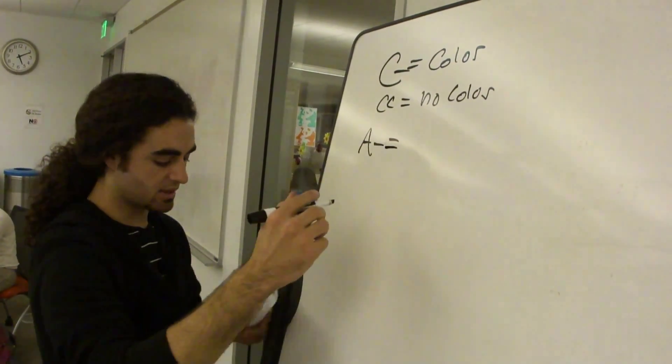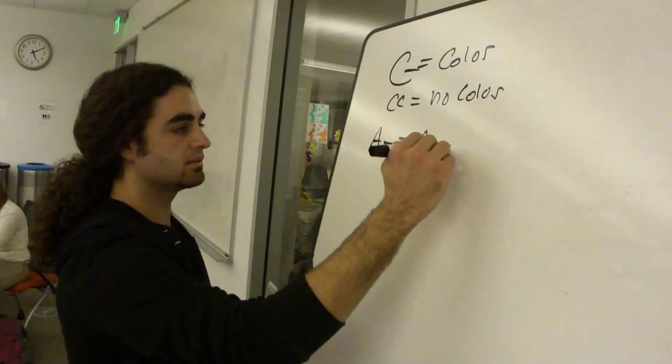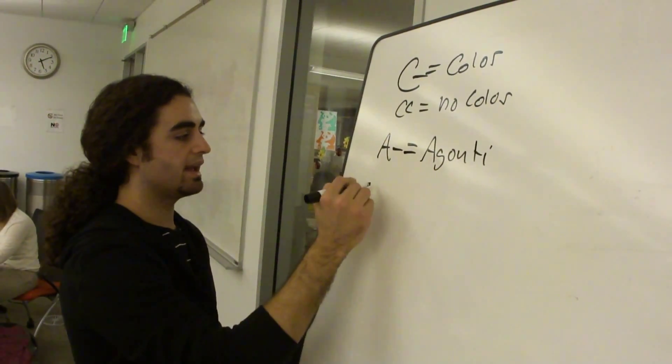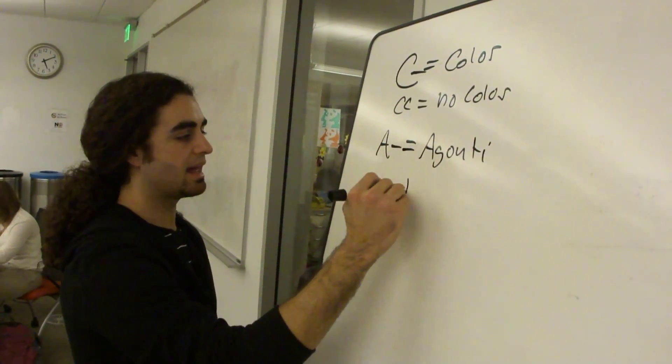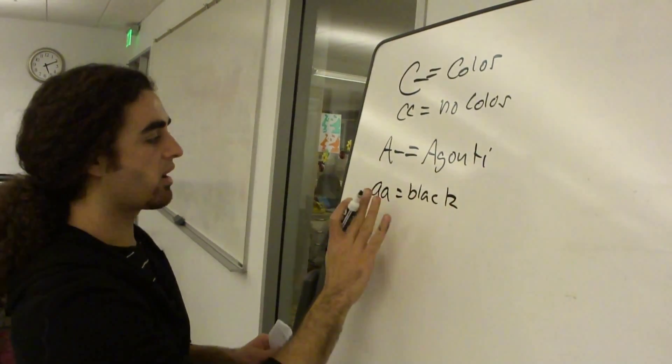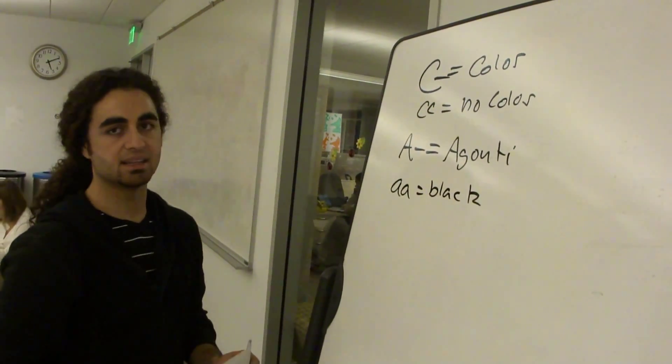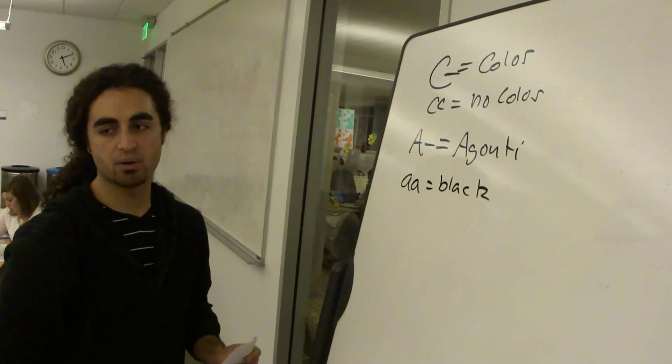So big A dash, it told us was agouti. And little a, little a is black. But we know that these two rely on the presence of a big C to get that, or else we're going to have no color.